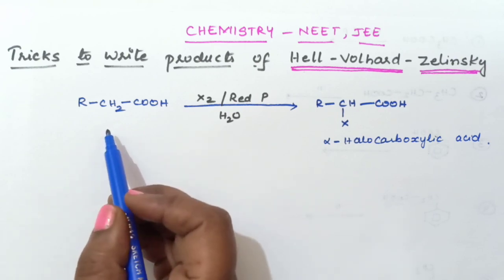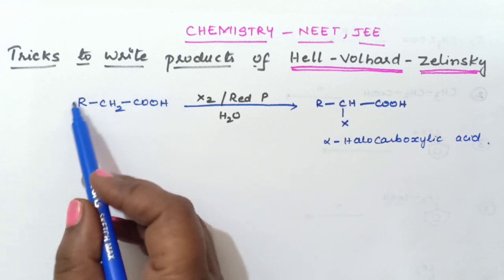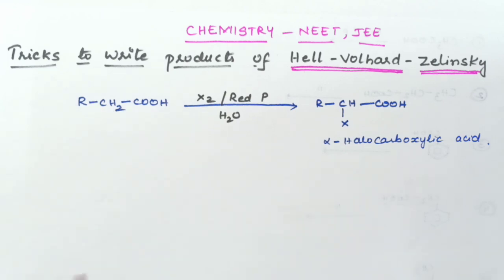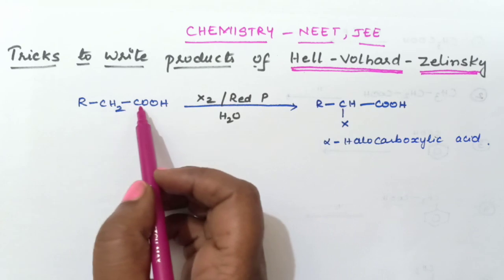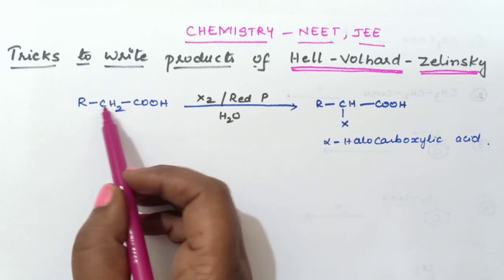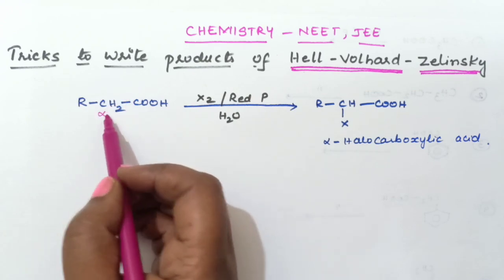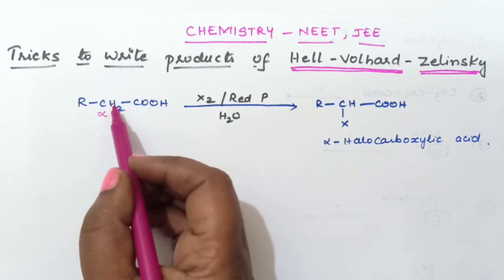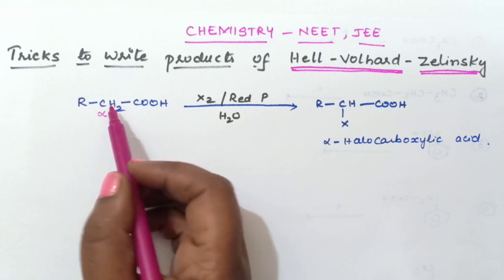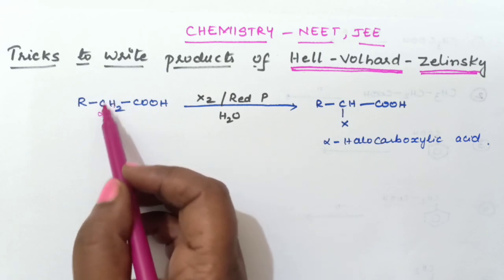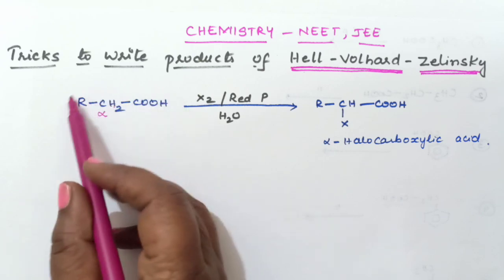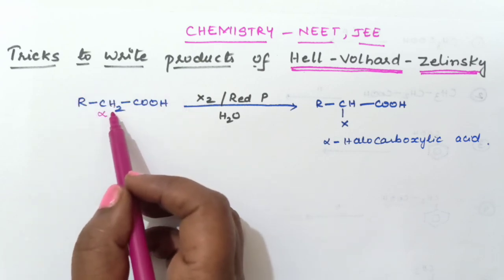First, let us study the reaction. We are going to take an acid containing an alpha hydrogen atom. The carboxylic carbon's adjacent carbon is called the alpha carbon, and the hydrogen atom present on the alpha carbon is called the alpha hydrogen atom. In this example, there are two alpha hydrogen atoms.